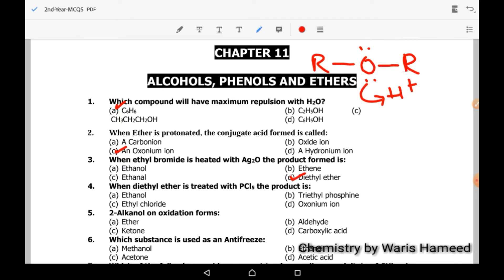In case of fourth MCQs, when diethyl ether is treated with phosphorus pentachloride, the product is ethyl chloride. 2-alkanol on oxidation forms ketone. 2-alkanol is actually a secondary alcohol and when we oxidize secondary alcohol, they form ketone.